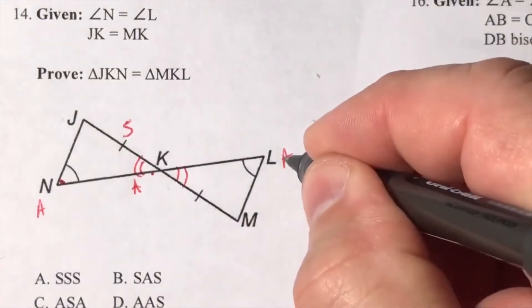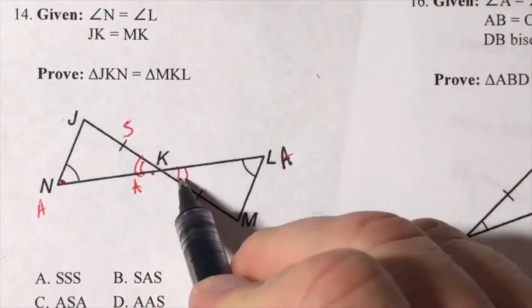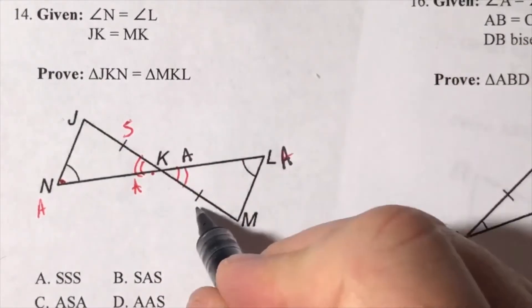In other words, this angle corresponds to this angle, and then I've got this angle that's congruent to this angle. There's my A and my side.